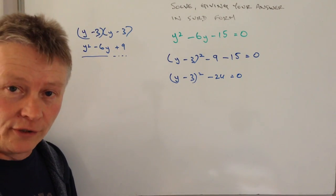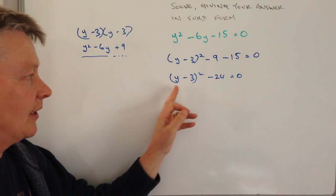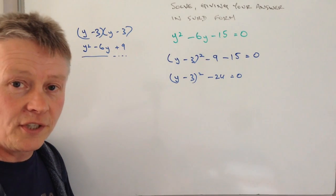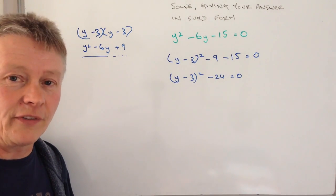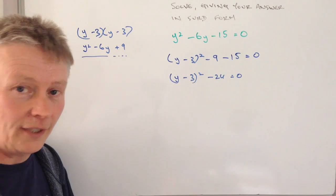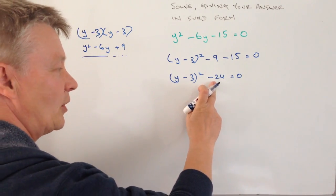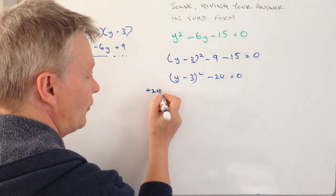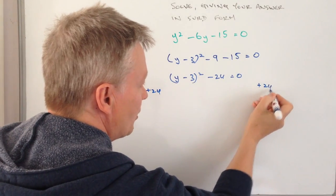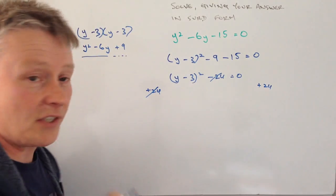Now it's asking us to solve it, in other words find out the value of y. Well the way I do that is just really using a little bit of algebra to isolate and find my value. So I've got this minus 24, I'm going to add 24 to both sides. Because if I do that those two will cancel out,